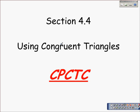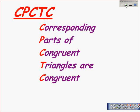We're looking at Section 4.4 today, using congruent triangles and the acronym CPCTC. I actually find it harder to say the acronym than what it actually means. CPCTC stands for 'Corresponding Parts of Congruent Triangles are Congruent.' In essence, if you can prove two triangles are congruent, then you can prove that their corresponding parts are congruent.